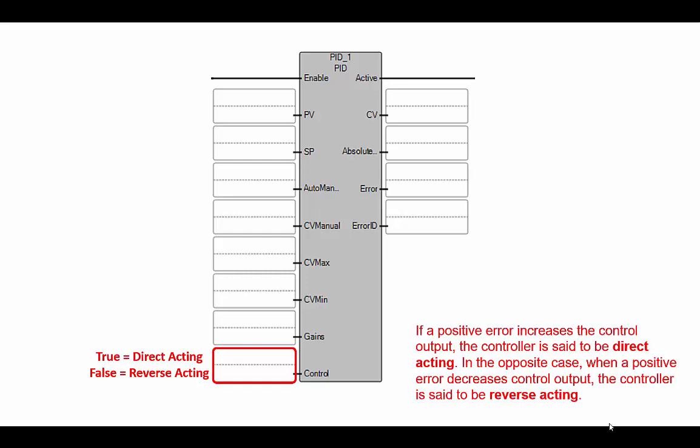In the opposite case, when a positive error between process variable and set point decreases the control output, then the controller is said to be reverse acting. So in our scenario of the tank filling system, if I have a positive error between the tank level and the desired fill level, that means it's fuller than it needs to be, I would need to decrease the controller output, or close off the valve a little bit. So in my scenario, the controller should be set to a reverse acting, so I'm going to put a false into this control variable here.